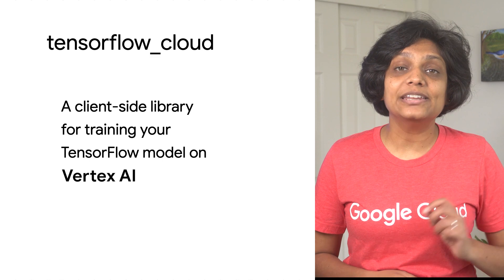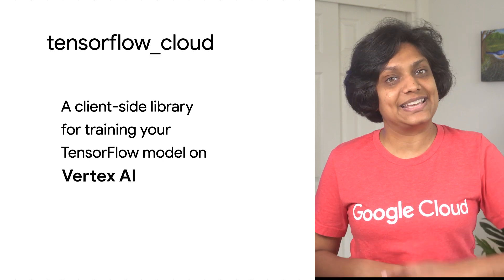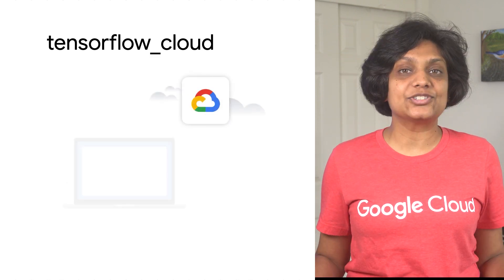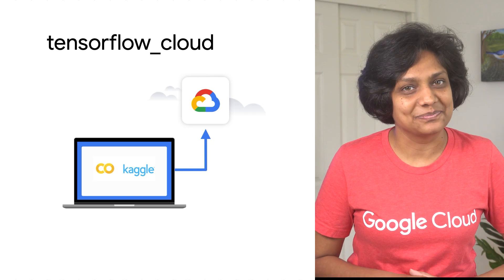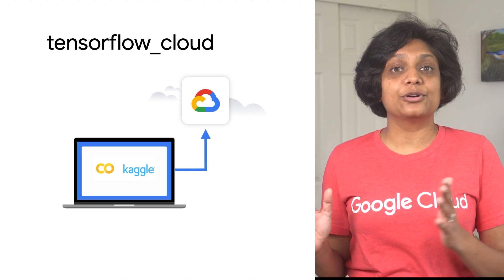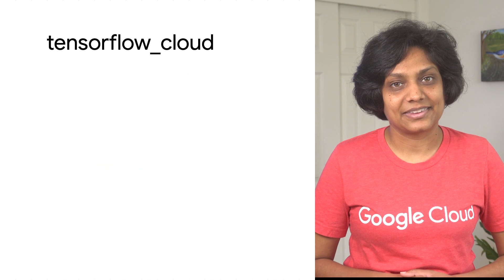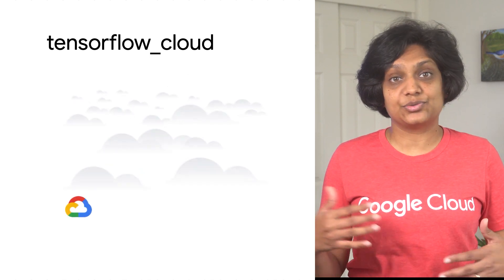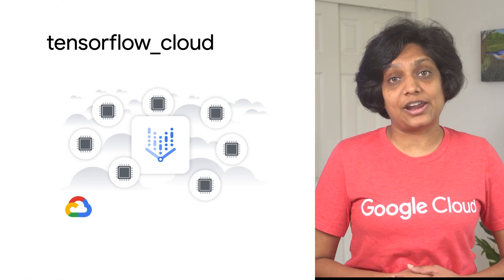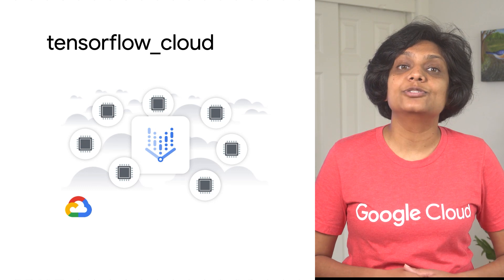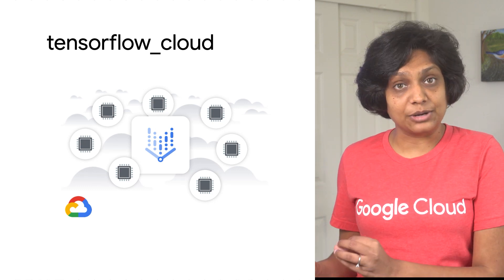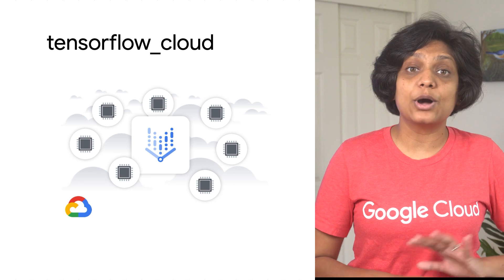TensorFlow Cloud is a client-side library for training your TensorFlow model on Vertex AI. It provides APIs for the seamless transition from local debugging to distributed training and hyperparameter tuning within Google Cloud. You can directly use it from a Colab notebook or a Kaggle kernel. It handles cloud-specific tasks such as creating virtual machine instances and distribution strategies for your model automatically. For distributed tuning jobs, TensorFlow Cloud sets up model callbacks to capture model checkpoints and TensorBoard logs automatically. Now let's take a peek into how it works.